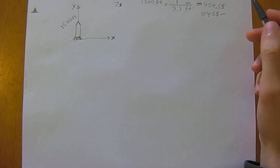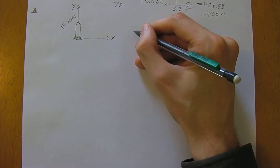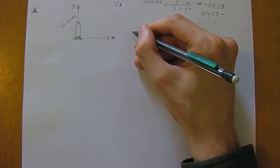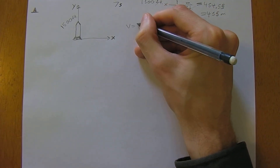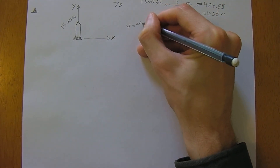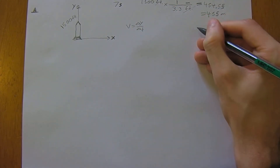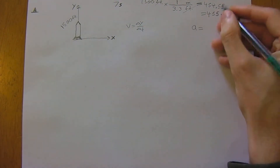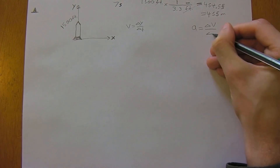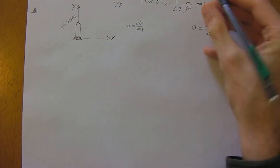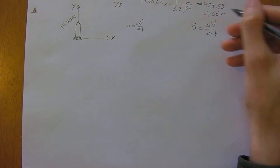Now we want to find acceleration. There are a couple of useful formulas to write down: velocity is change in y over change in time, and acceleration is change in velocity over change in time. Velocity is a vector — it has a direction — and so is acceleration.